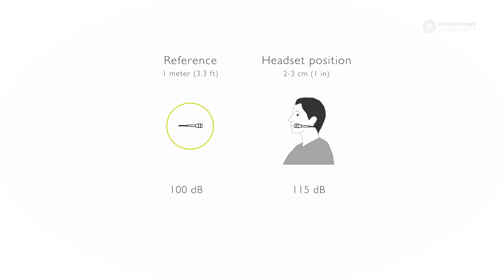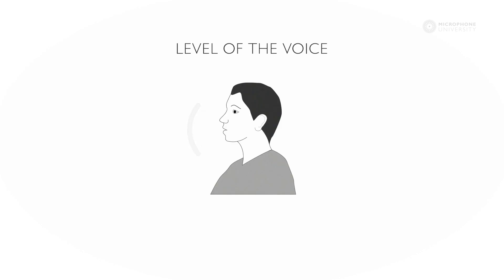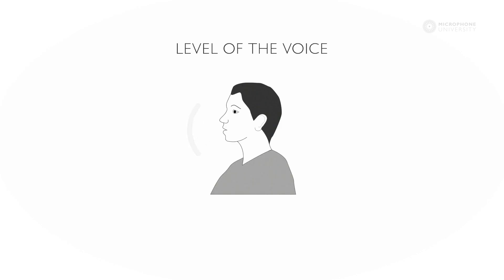If we move even closer, like the headset position, the level is increased by another 10 dB. So at the headset position the level is increased by 25 dB in total compared to the normal conversation distance. This means that the sound level of a person shouting measured at 100 dB 1 meter away will be 125 dB at a typical headset position about 2.5 centimeters or 1 inch away from the mouth.